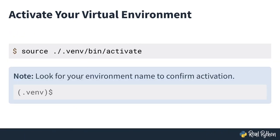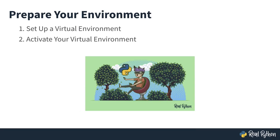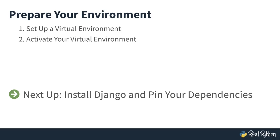Always look for the name of your virtual environment before your prompt to confirm that you've activated it and that you're in a safe space to continue with the next steps. As a quick recap, to prepare your environment you need to do two things: first, set up a virtual environment, and then activate it. If the concept of virtual environments is still a little blurry, make sure to check out the dedicated tutorial and course. Next up, you can get ready to install Django and pin your dependencies.